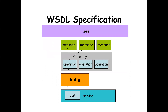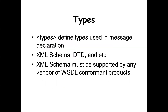This is shown in a diagram. You have types, messages, and in port type you have operation, binding, then port and service. When I say types, as I mentioned, it helps you to define the types used in the message declaration, maybe an XML schema or DTD, etc.